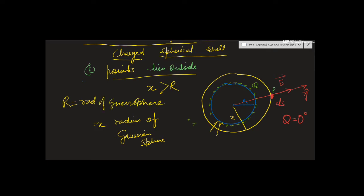The yellow circle is the imaginary Gaussian sphere, used so that we can apply Gauss Law. Its radius is x. There are two spheres: the given sphere with radius R, and the Gaussian sphere with radius x.